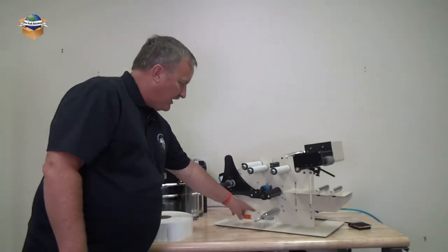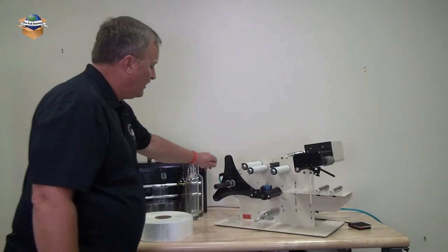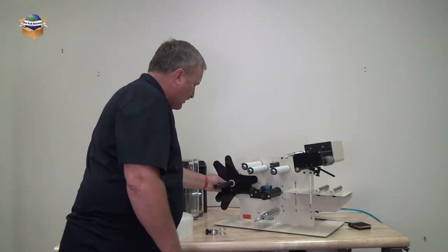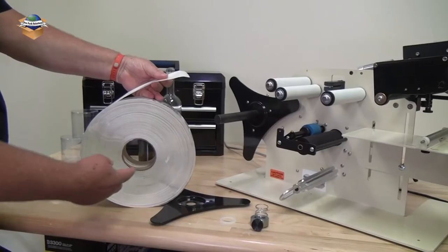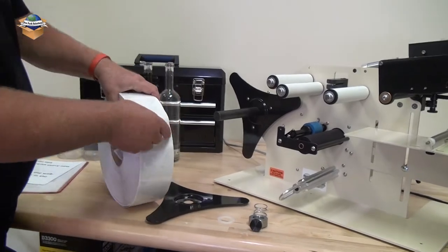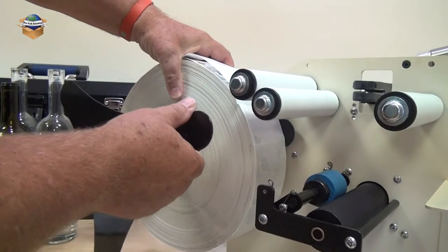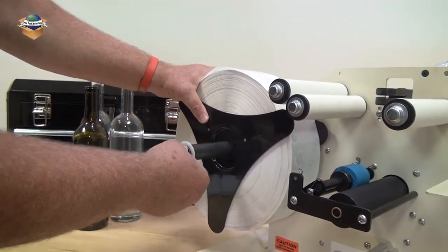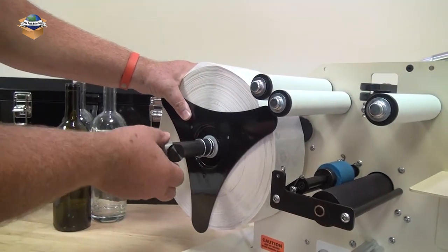To set up the machine we have instructions right here on the side that will explain how to feed the labels. We're going to remove this collar, spring and plastic washer and side guide. You're going to mount your roll of labels to where the labels come off and go over the top. Put on the washer, the spring and the collar.